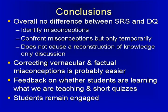So here are my conclusions. Overall, there's no statistical difference. However, the student response systems are very good at: one, identifying those misconceptions — I know if the students got them or not, whereas before I didn't know until afterwards. It allows the students to confront those misconceptions, especially if I tell them the right answer — at least at some point they've realized the way they're thinking isn't working. By itself, it doesn't cause them to rebuild their knowledge framework. It does seem to work better with the vernacular and factual types of misconceptions.